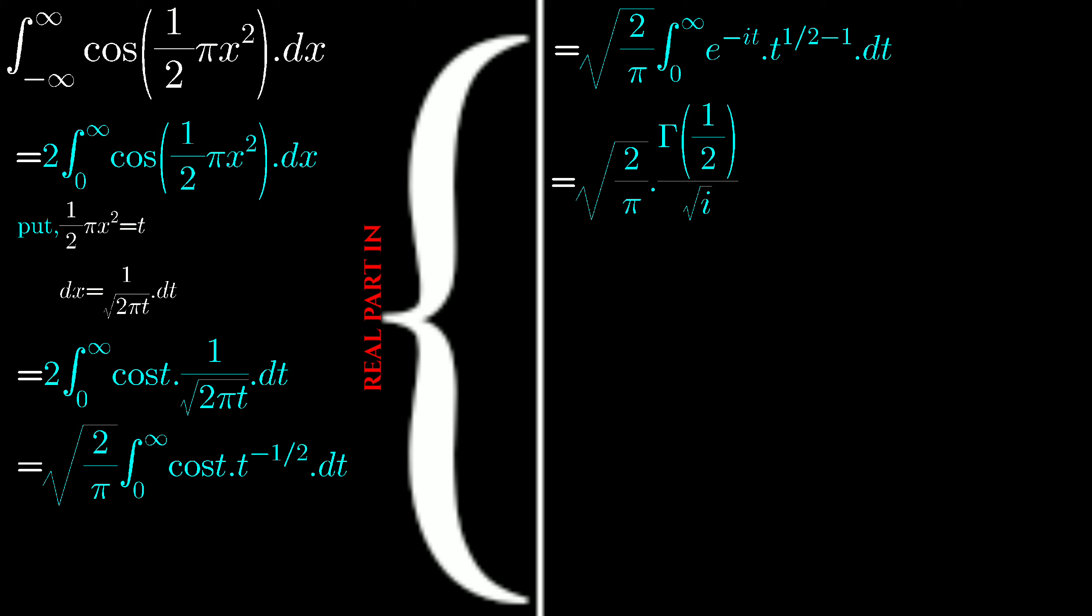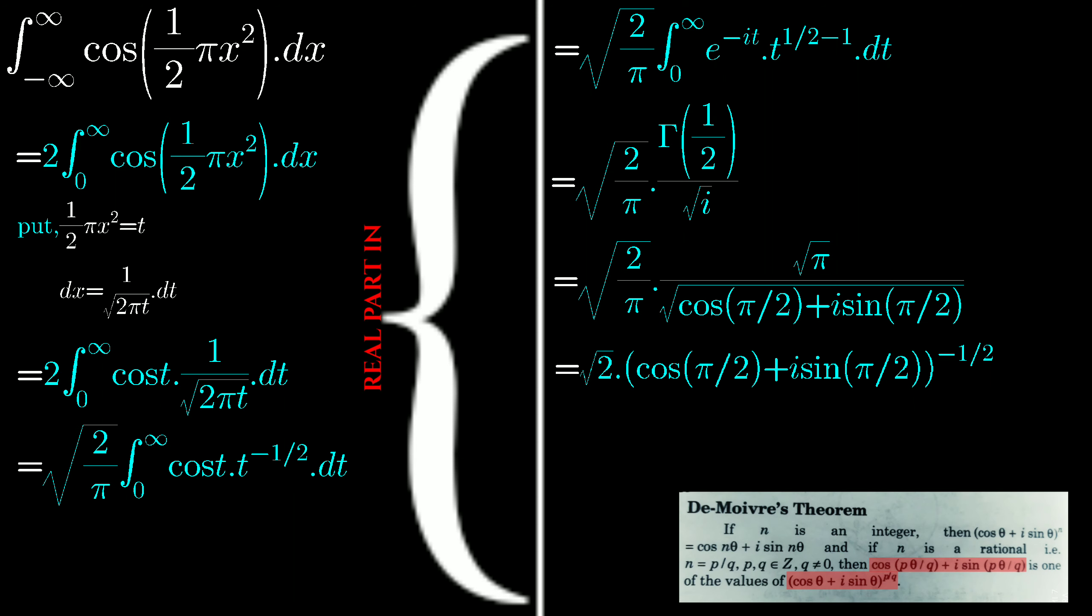And if I'm not wrong, we can write i as cos(π/2) + i sin(π/2). And here from De Moivre's theorem, we can take power -1/2 into the angle of the trigonometry function.